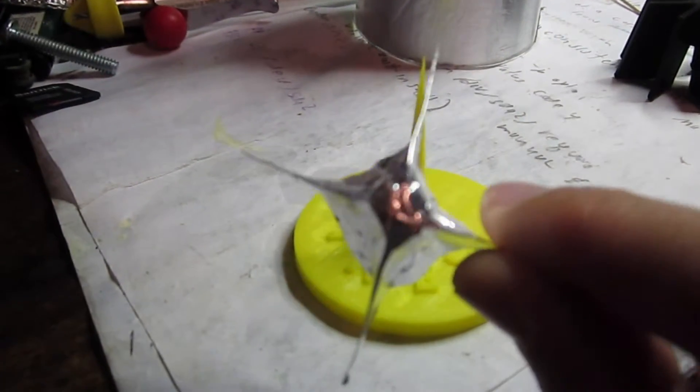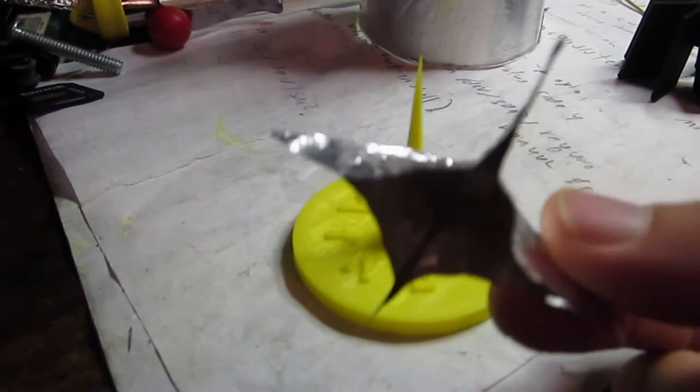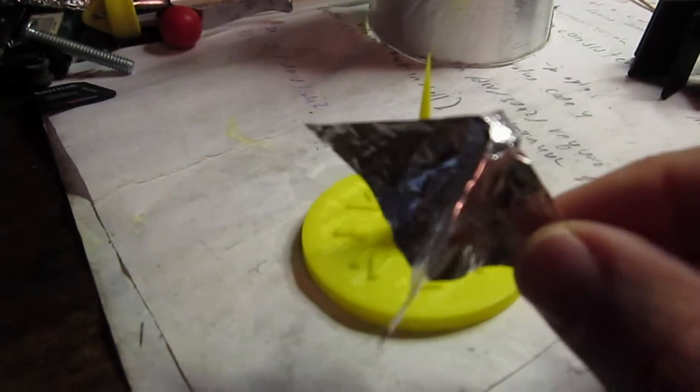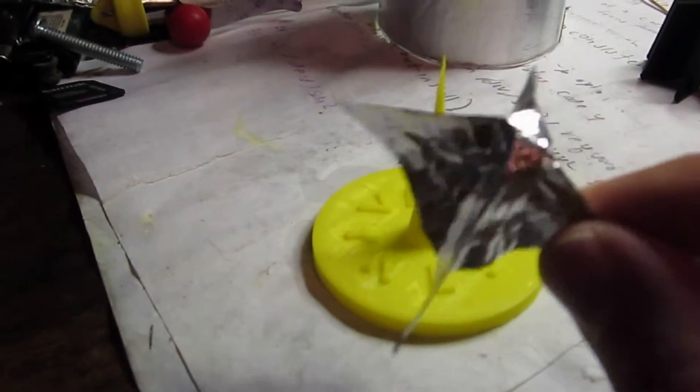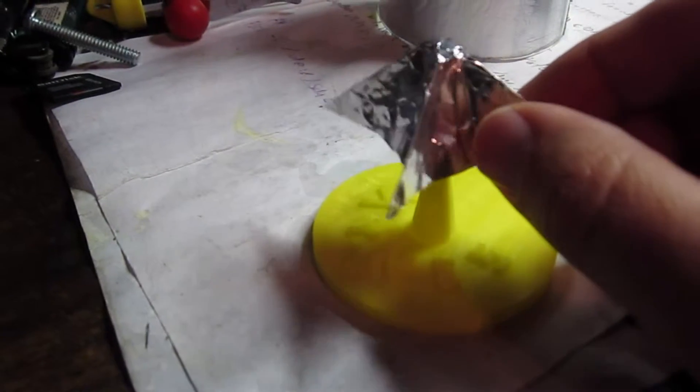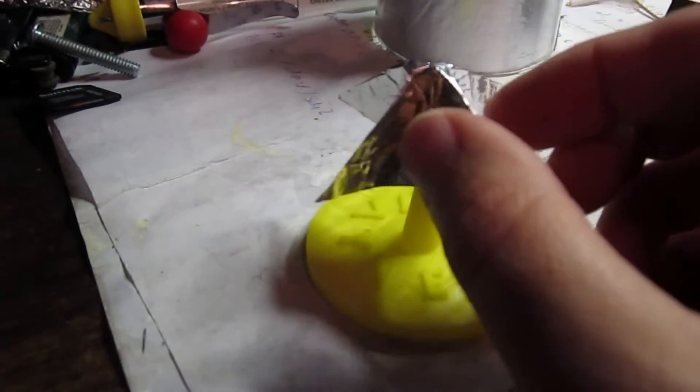These rotors that I'm making are just a square piece of aluminum foil, approximately 2 1/2 to 3 inches squared. And then I just fold it at the corners and stick it on the guy and it makes a very low friction bearing.